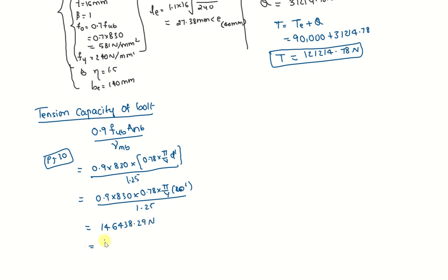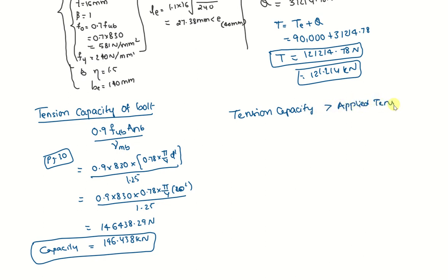So if you compare, convert it into kilonewton 146.438 kilonewton. So that is the capacity, tension capacity of the bolt. And this is applied tension. That is 121.214 kilonewton. It is very clear that applied tension is far less than the tension capacity. So here we can say tension capacity greater than applied tension. Tension capacity we got it as 146.438 kilonewton and whereas applied tension is 121.214 kilonewton. So the capacity is more than the applied load. So it is safe. Thank you.